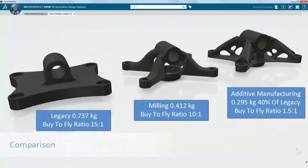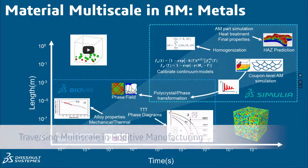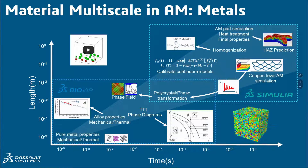The idea is that we can take information from lower scales — from atomistic-type simulations and phase-scale simulations as shown on the lower part of the graph — and leverage that into calibrating continuum models, as shown by the equations in the center, so they can be used effectively at continuum scale, finite element scale, and part-level simulations.